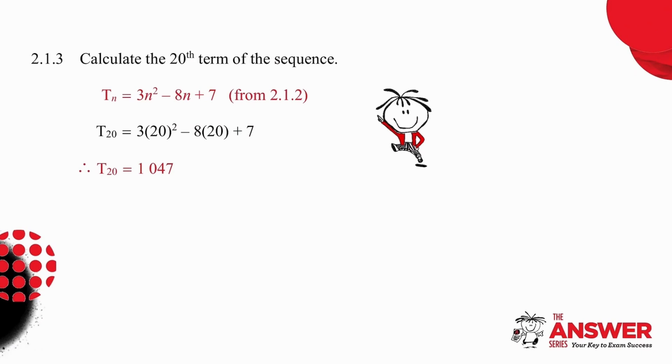To work out the 20th term, we are simply going to take the formula that we've worked out, replace all the n values with 20, and work out that the 20th term is 1047.